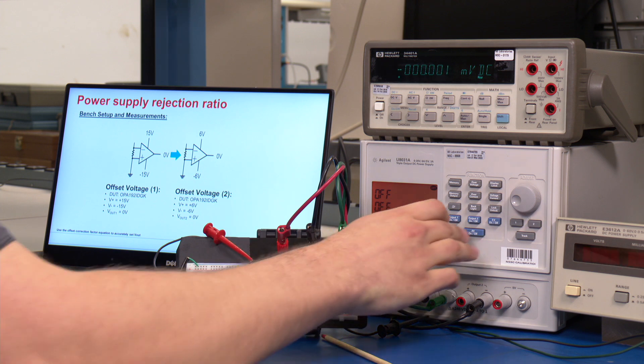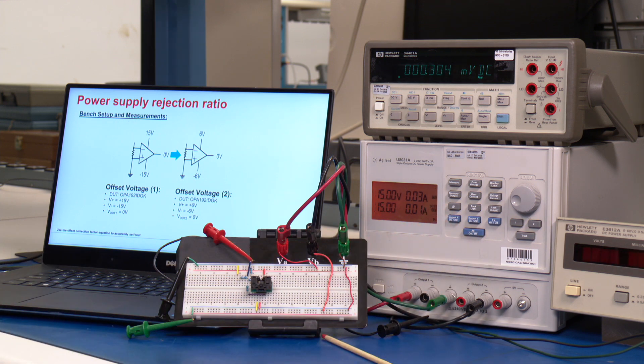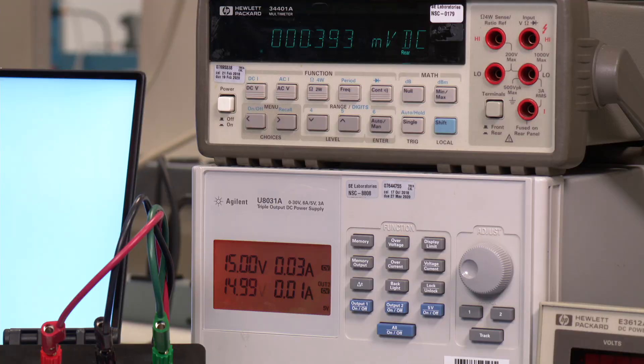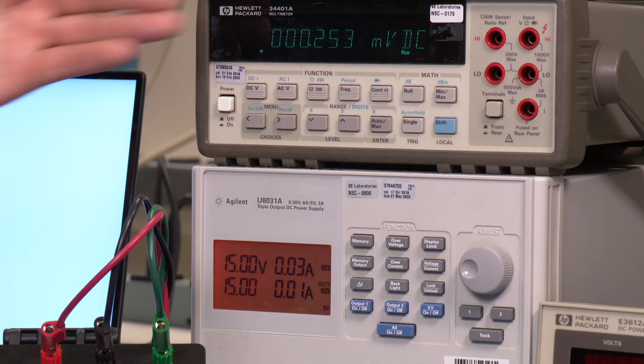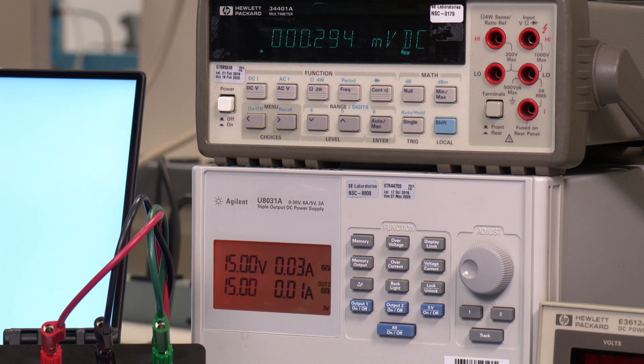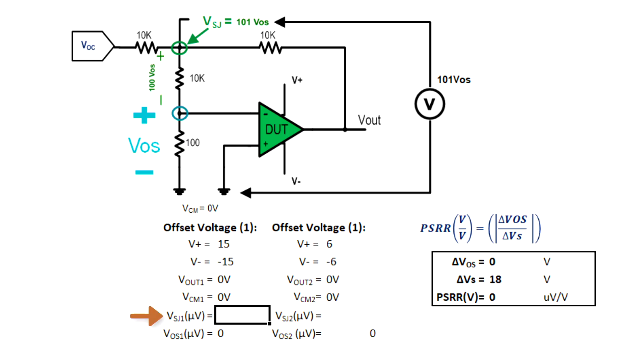In this first condition, we'll measure the offset at approximately plus or minus 15 volts. In the plus or minus 15 volt condition, we see the offset voltage is approximately equal to 294 microvolts to 300 microvolts. Let's enter that into our spreadsheet. We see that the offset of the amplifier is approximately 2.9 microvolts.